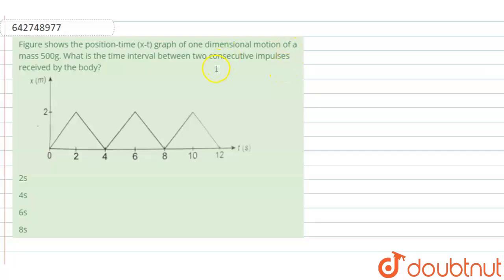Hello, here's a question. The figure shows the position time graph of one dimensional motion of a mass 500 gram. What is the time interval between two consecutive impulses received by the body?